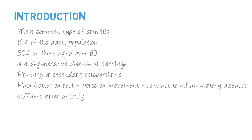Osteoarthritis can be of two types: primary or secondary. Primary osteoarthritis is degeneration of the cartilage over time. Secondary osteoarthritis happens secondary to many conditions, which can include trauma, developmental dysplasia of the hip, metabolic disorders, and infection — all of these can lead to arthritis later down the line, labeled as secondary arthritis.